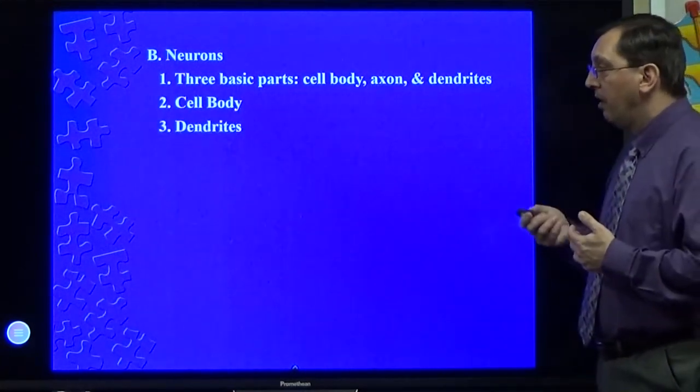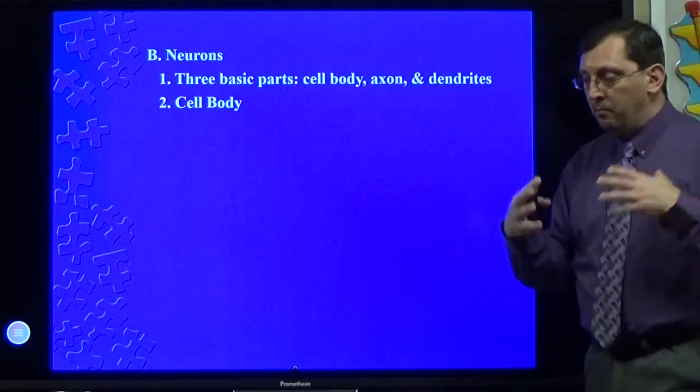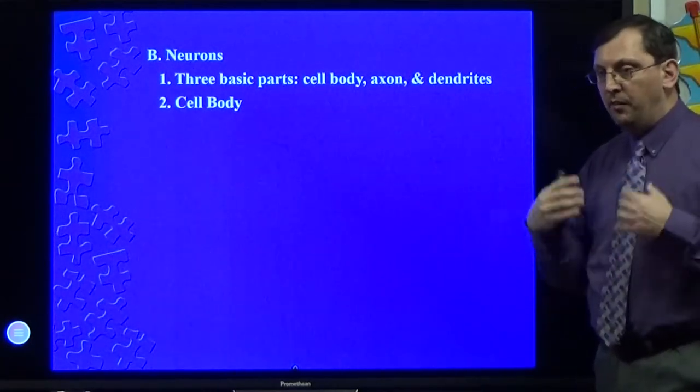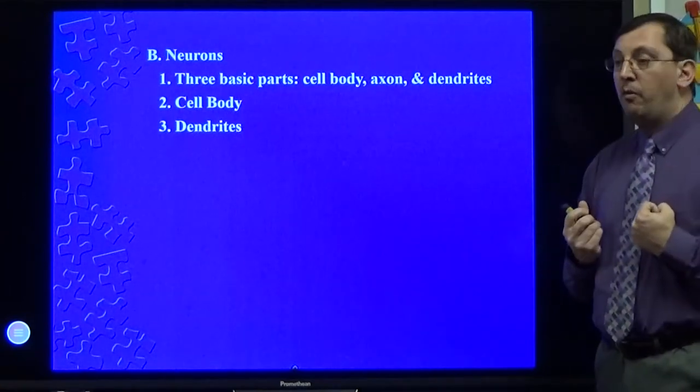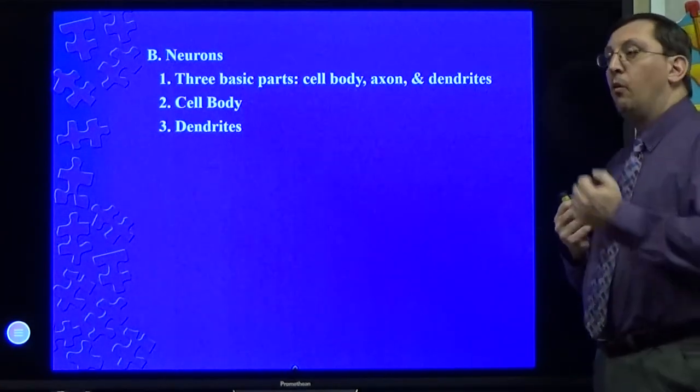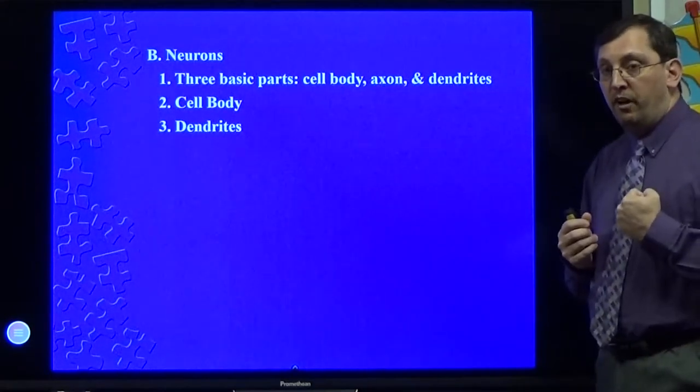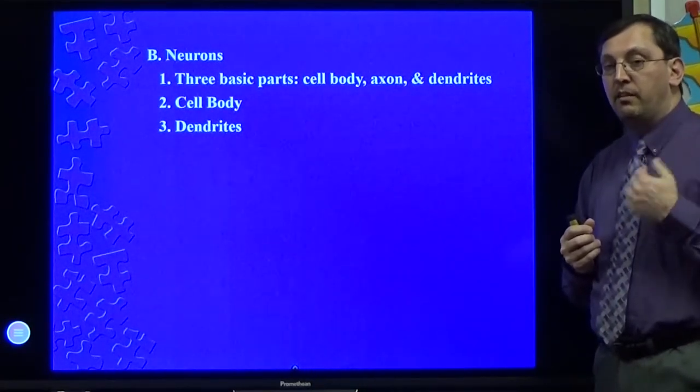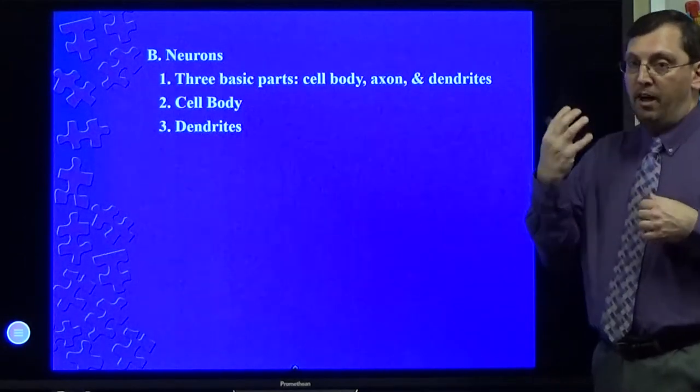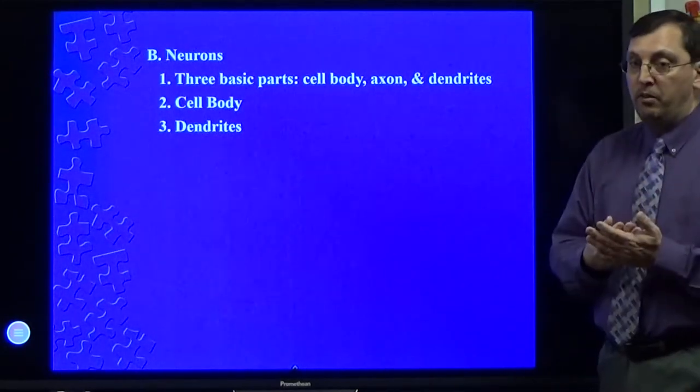The cell body is going to be that centralized core keeping the cell alive and functioning. The dendrites are going to receive information, whether from other neurons or from receptor cells, such as the ones in the eyes that pick up light, the ones in your ears that pick up sound, and ones that pick up touch in your skin.